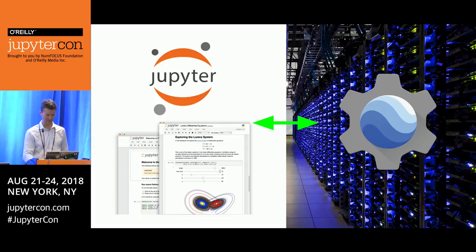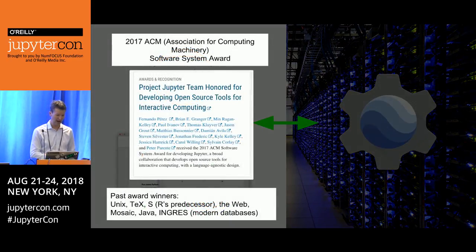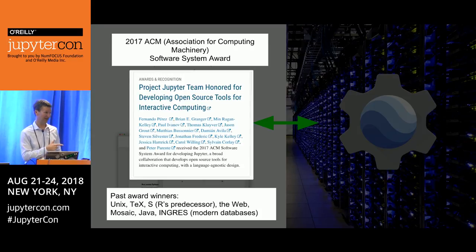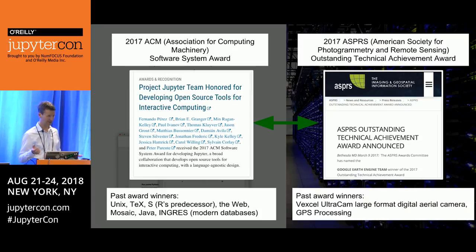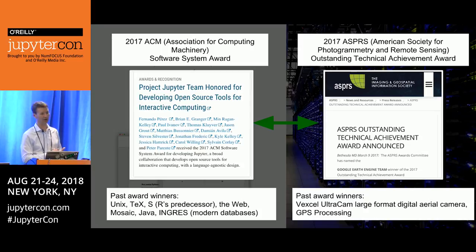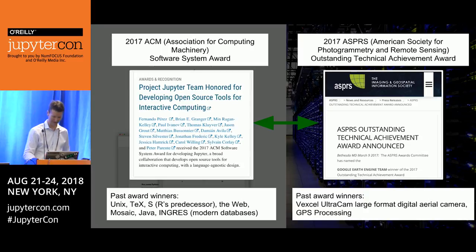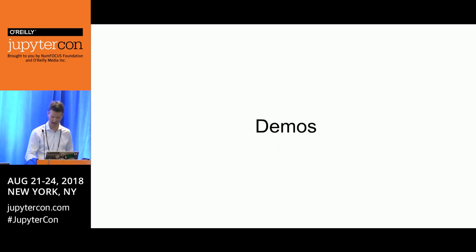I really appreciate, and I'm sure most people at this conference appreciate, the impact that Jupyter has had, and I'm really glad to see they have been awarded for it. In the smaller community of Earth science, or at least remote sensing, about the same time last year, Earth Engine was awarded a technical achievement award that's only been awarded twice before in history — once for large-format aerial cameras and once for GPS. We're really happy about that award and have been having a pretty large impact in parts of the remote sensing area.